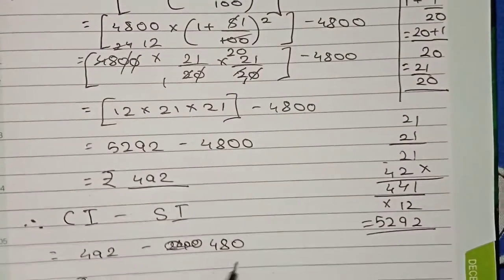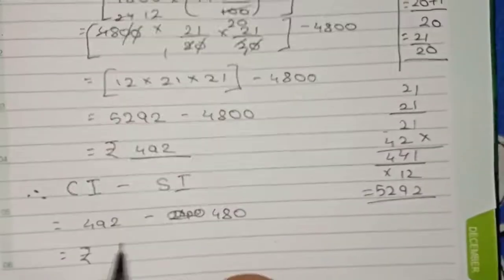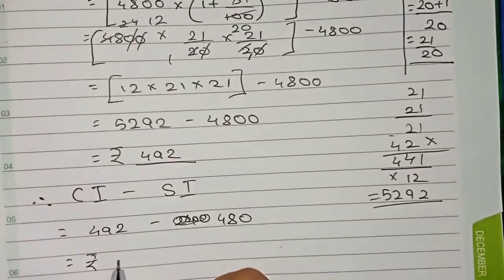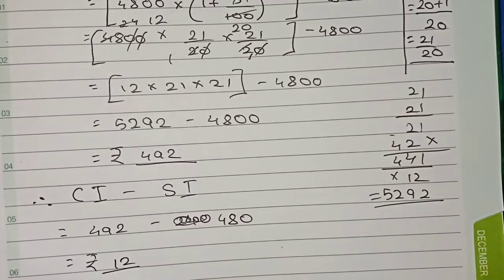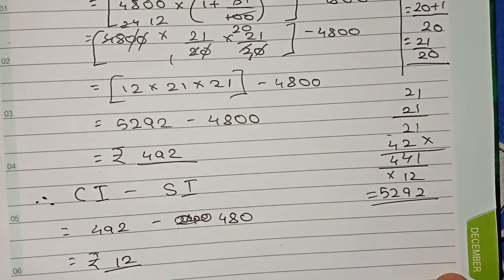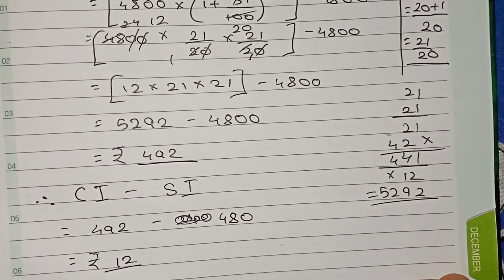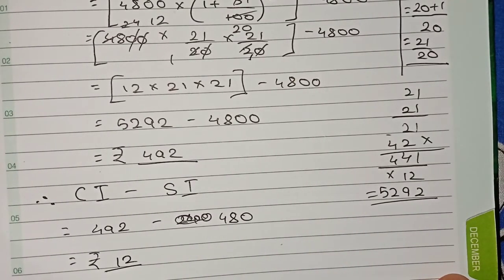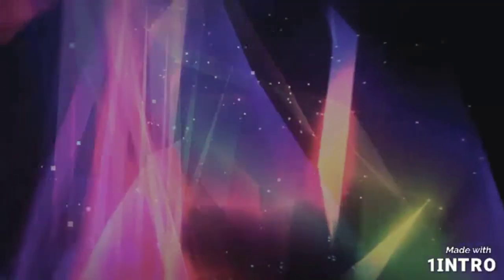So four hundred ninety-two minus four hundred eighty equals rupees twelve. Therefore, the difference between compound interest and simple interest is rupees twelve. Thanks for watching this video — please subscribe to my channel for more solutions.